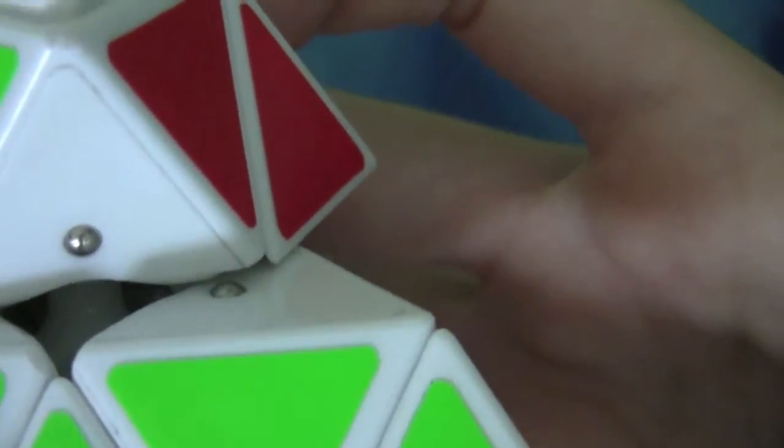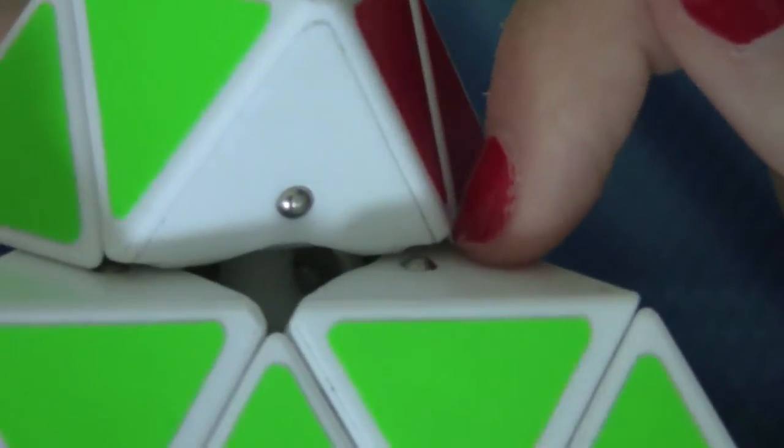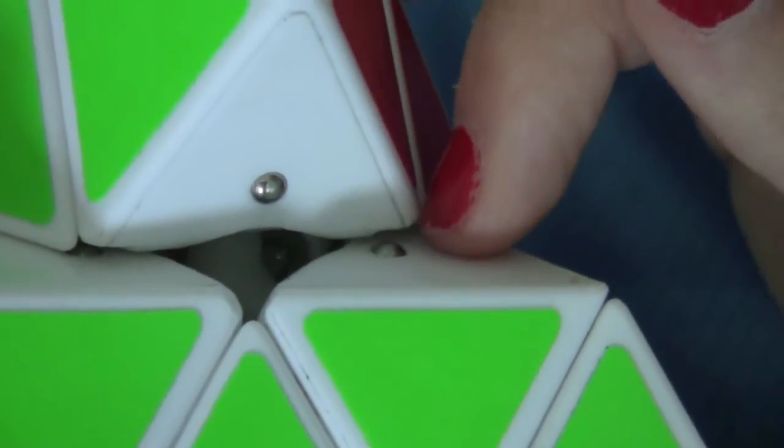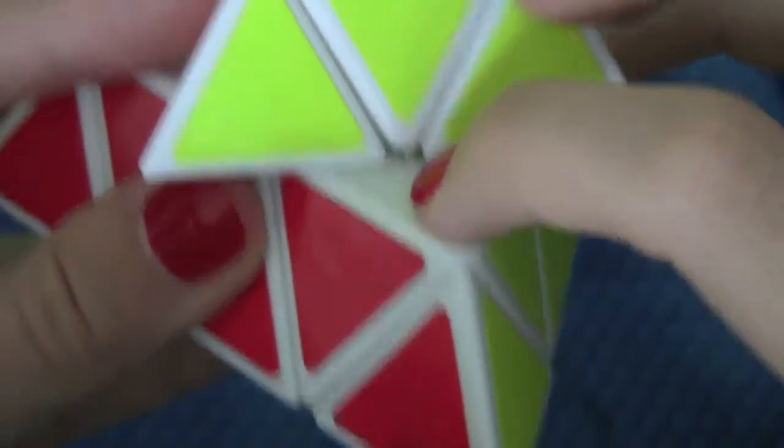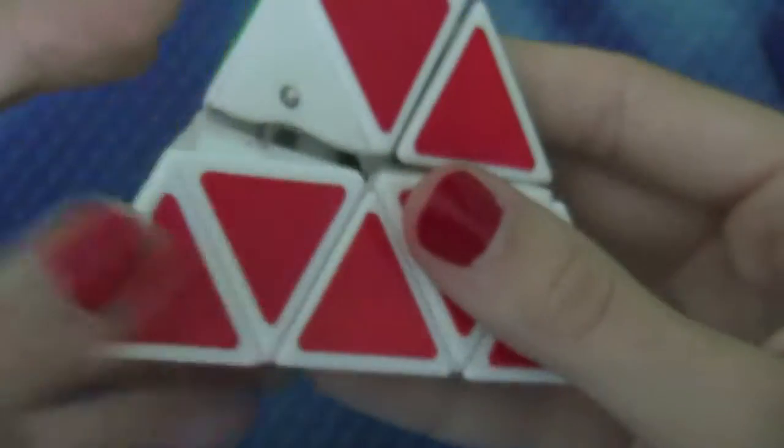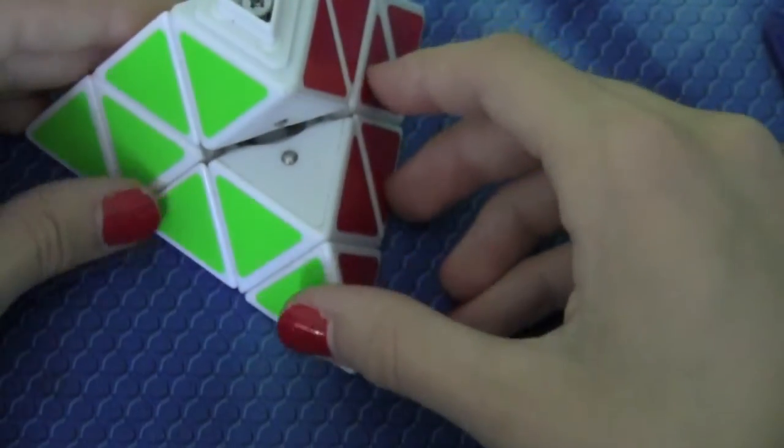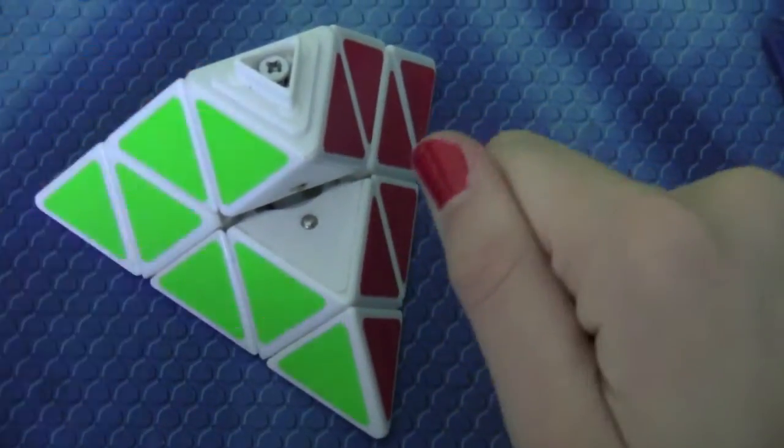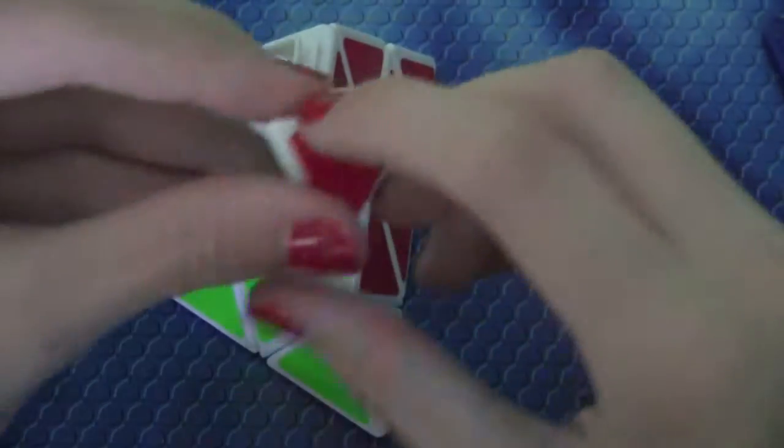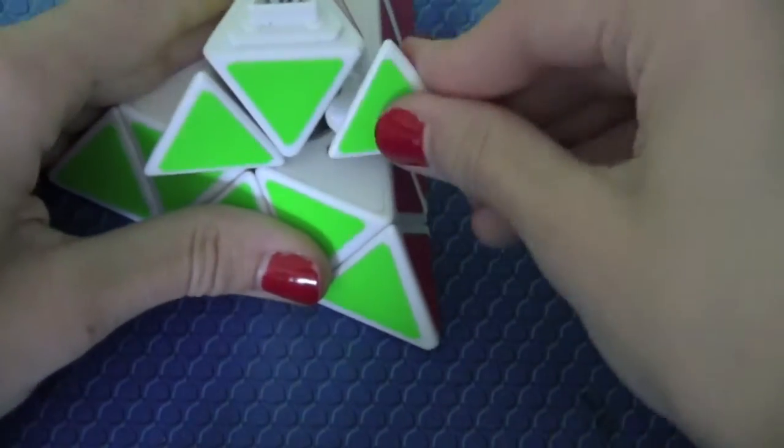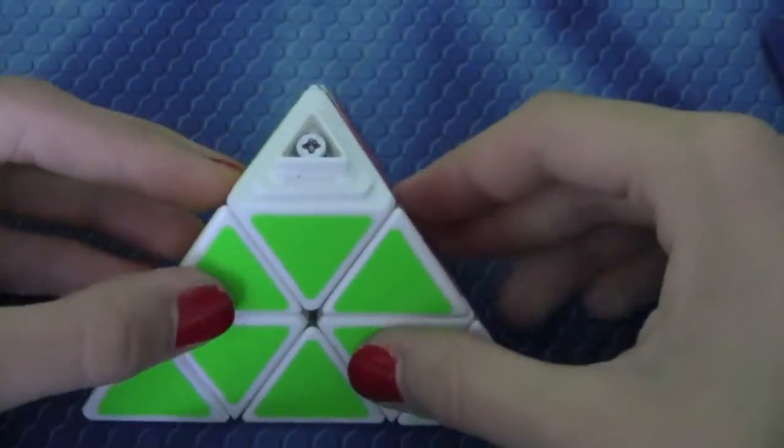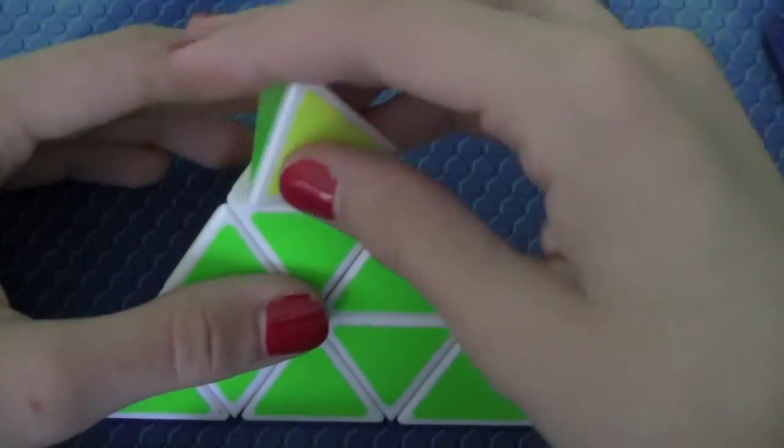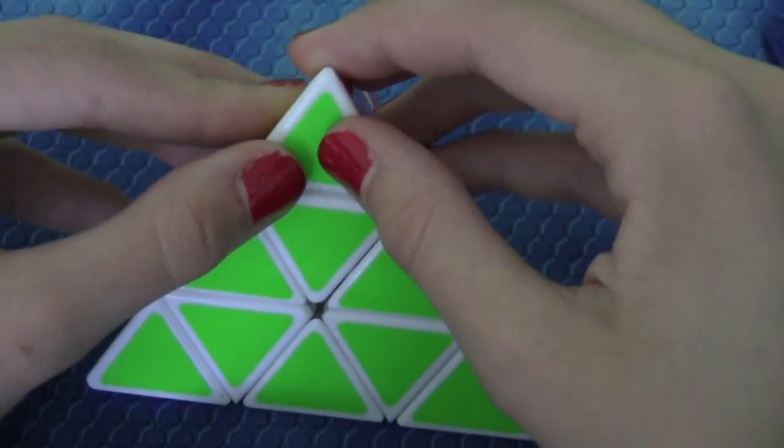And then the last modification that I did is that I rounded this piece off right here. And you do it on all three sides and you simply rub it on a nail file or sandpaper for maybe 10-15 seconds and it will round it off a bit and it will help the cube corner cut as well as with some catches.